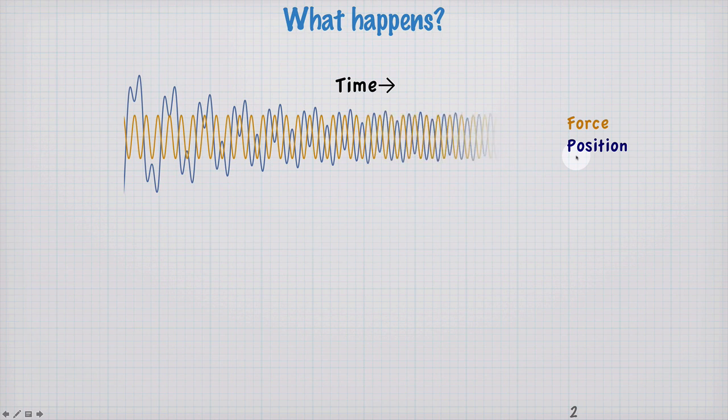And this is what we see. What we see is the yellow line is a sinusoidal driving force. At short times, the position of the oscillator looks kind of crazy. It seems to have two different frequencies going on here, and double humps and all kinds of stuff.